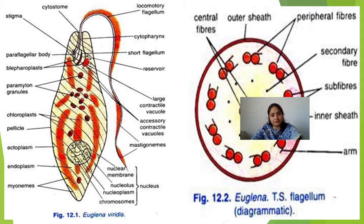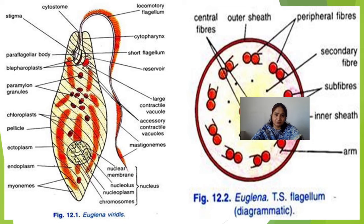The nucleus is mostly present toward the posterior end. The chromatin body is present within it. The cytoplasm is divided into two parts: ectoplasm and endoplasm. Ectoplasm is present on the exterior and is clear and non-granular, while the endoplasm is granular and contains the cell organelles.